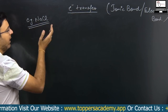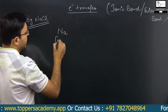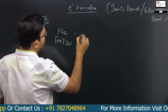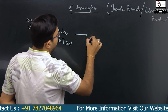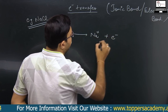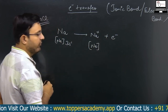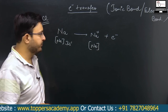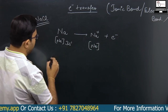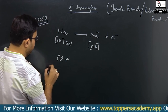In NaCl, sodium has the configuration [Ne] 3s¹. It loses one electron to become Na⁺, and its electronic configuration becomes the same as neon. Chlorine has the configuration [Ne] 3s² 3p⁵, giving seven valence electrons. It needs one more electron to complete its octet, so chlorine gains one electron.